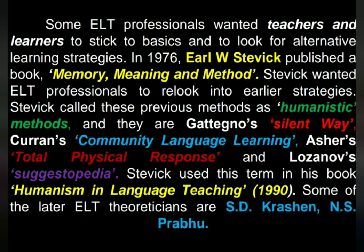Some ELT professionals wanted teachers and learners to stick to basics and to look for alternative learning strategies. In 1976, Earl W. Stevick published a book, Memory, Meaning and Method. Stevick wanted ELT professionals to re-look into earlier strategies. He called these previous methods humanistic methods, and they are: Caleb Gattegno's Silent Way, Community Language Learning, Total Physical Response, and Lozanov's Suggestopedia. Stevick used this term in his book Humanism in Language Teaching, 1990. Some of the later ELT theoreticians are S.D. Krashen and S. Prabhu.